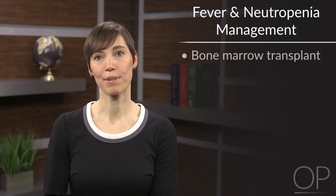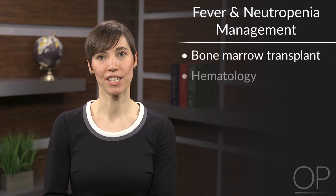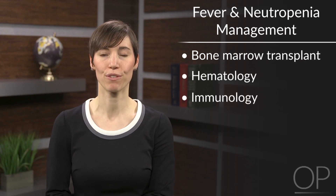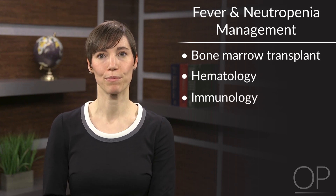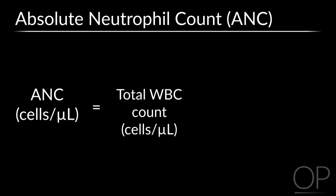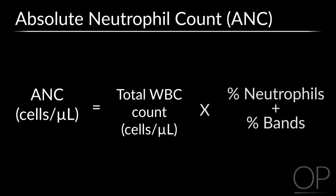The management of febrile neutropenic patients on bone marrow transplant and other services, such as hematology or immunology, may be slightly different, so speak to your fellow or attending. The general principles, however, are the same. Before going any further, it's important to know how to calculate the absolute neutrophil count, or ANC. The ANC is calculated by multiplying the total white blood cell count by the sum of the percentage of neutrophils and bands. Be careful with your units and decimal places.